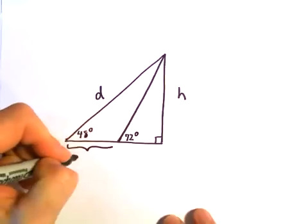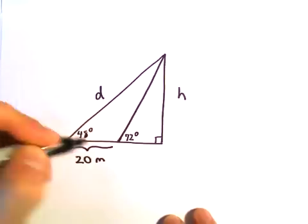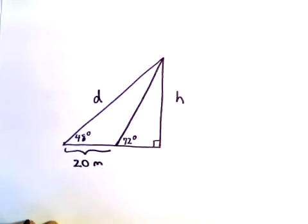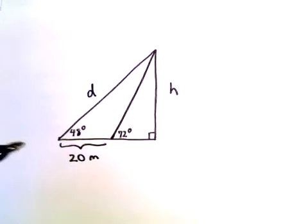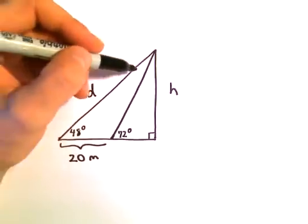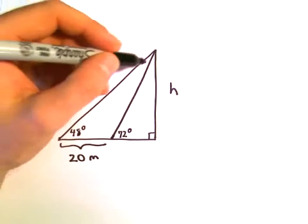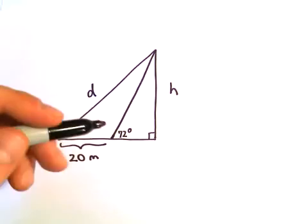We know that this length is 20 meters, that was given to us in the problem. So we know that they're 20 meters apart. What I'm going to do here is try to figure out some more angles in the triangle, and I think that's going to help us.